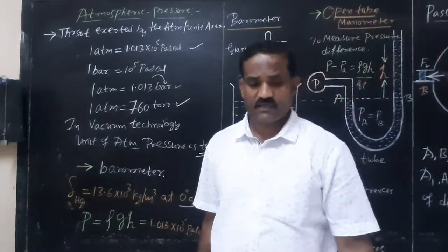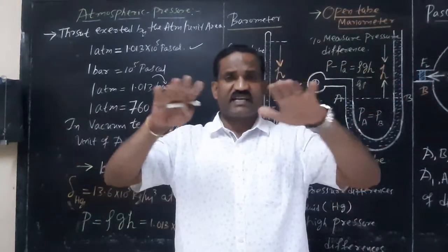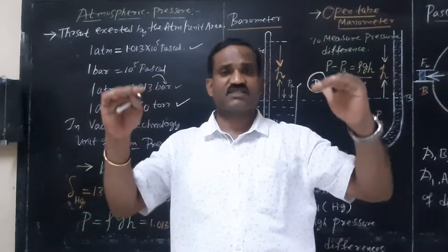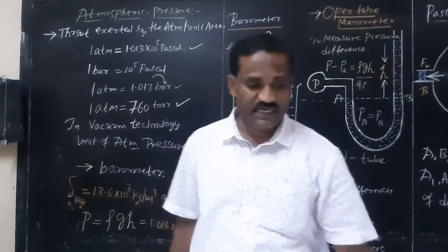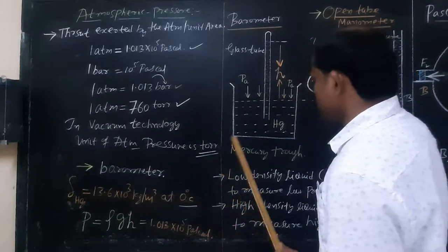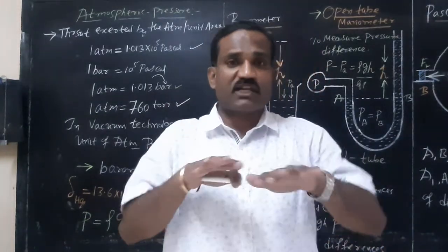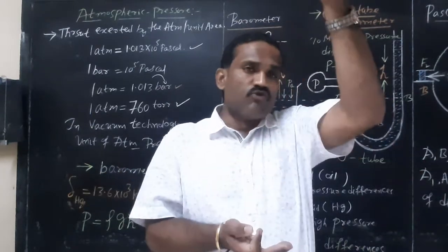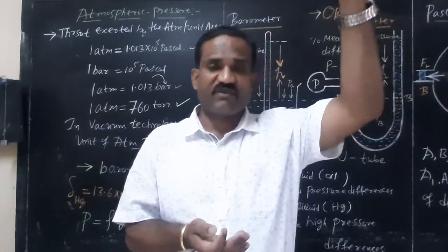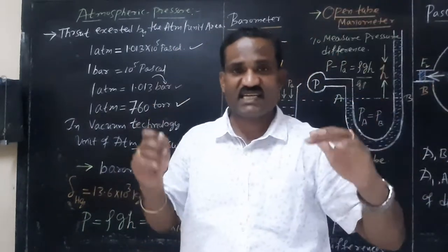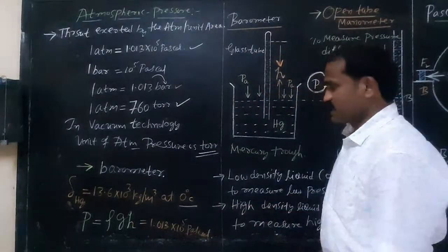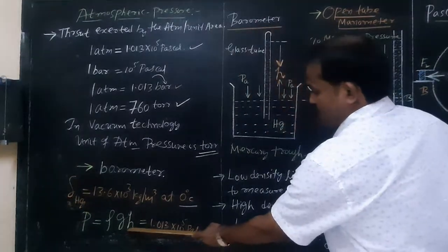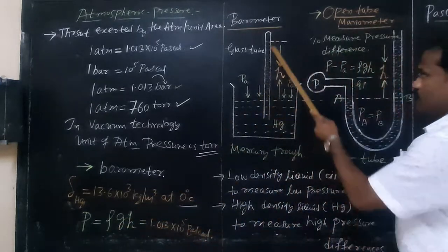The density of air is maximum at the surface of the earth. As you move away from the earth, the density of the gases decreases, and as a result, atmospheric pressure also decreases. Therefore, atmospheric pressure is maximum at the surface of the earth and decreases as height increases. Atmospheric pressure is directly proportional to the height of liquid that rises in the glass tube.